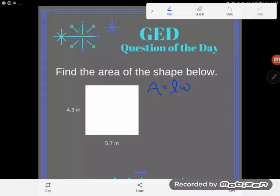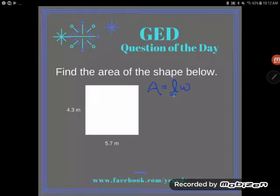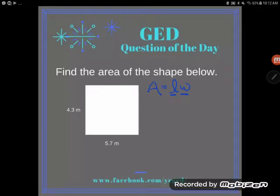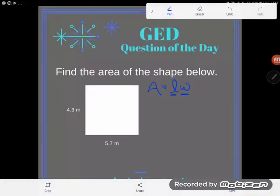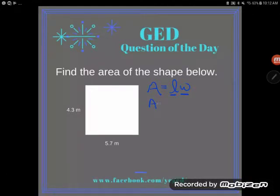This is a very simple little formula to follow. It says to find area, the A is all by itself, that's what we're finding. Multiply together the length and the width. When two letters are shoved together in algebra, we're going to multiply them together.